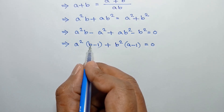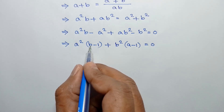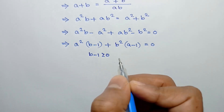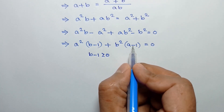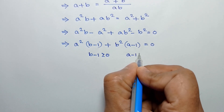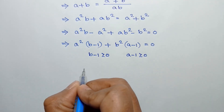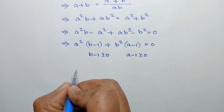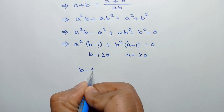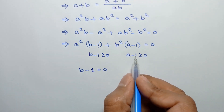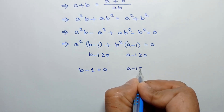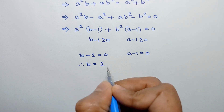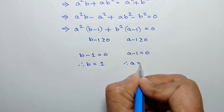Since b is greater than or equal to 1, b minus 1 is greater than or equal to 0. Since a is greater than or equal to 1, a minus 1 is greater than or equal to 0. As the sum of these two terms is 0, b minus 1 must equal 0 and a minus 1 must equal 0, so b equals 1 and a equals 1.